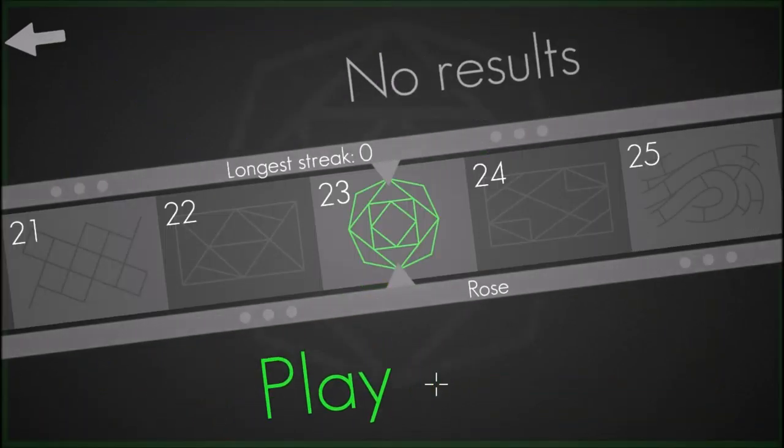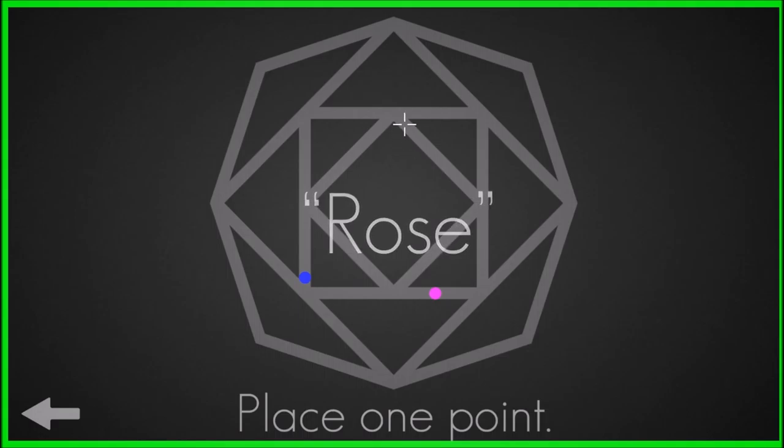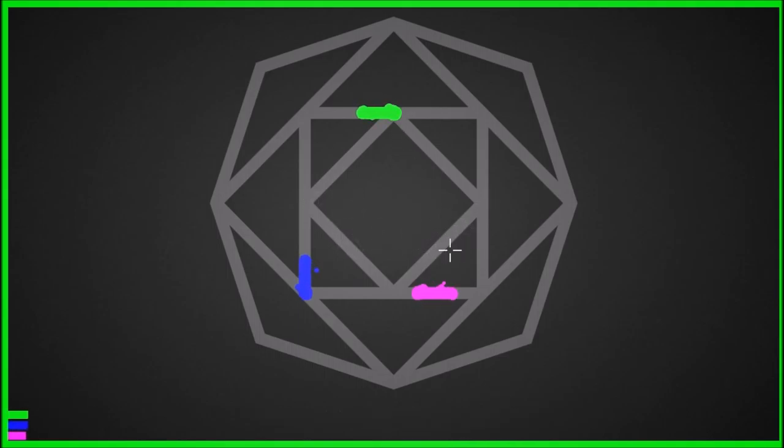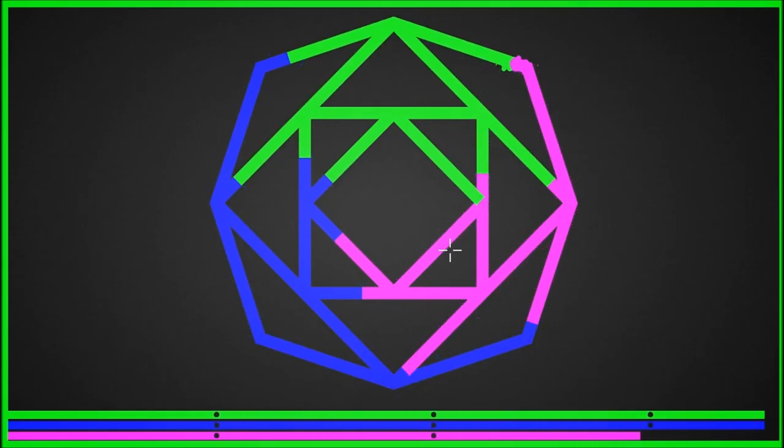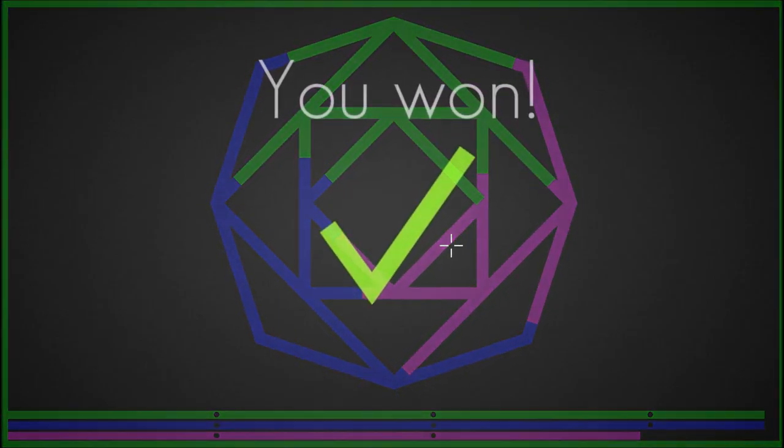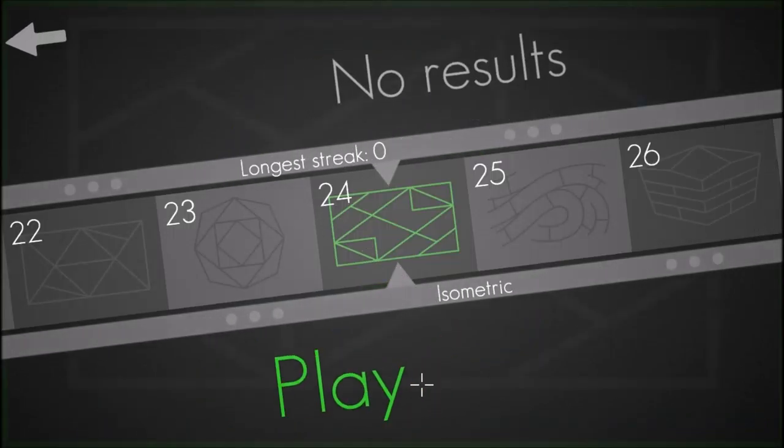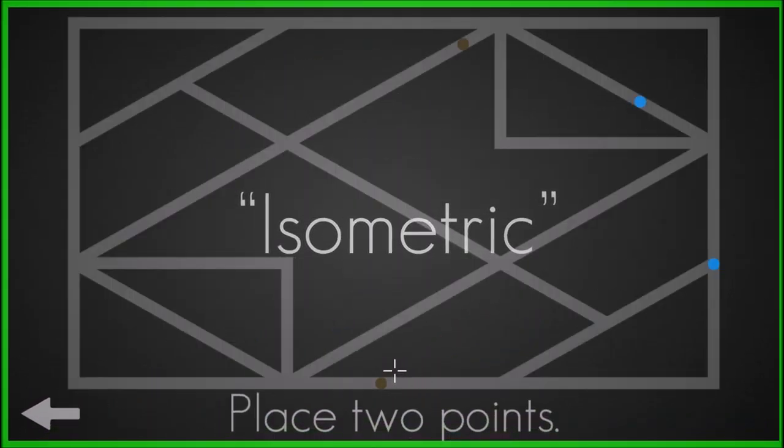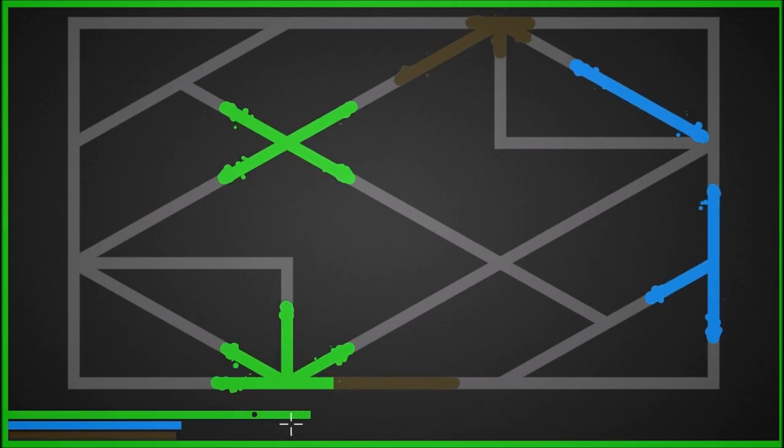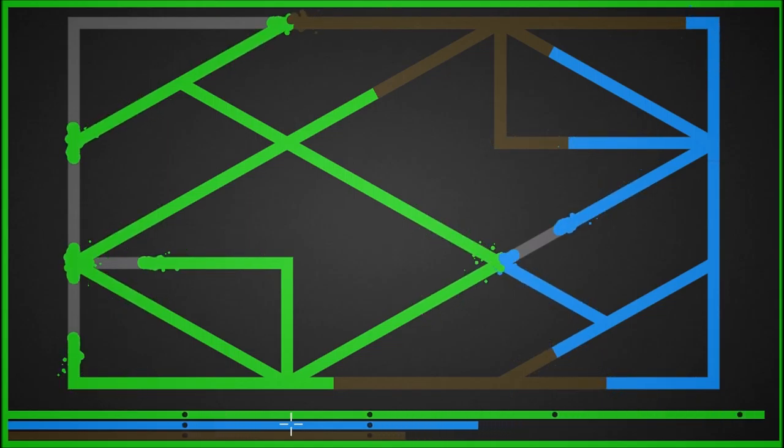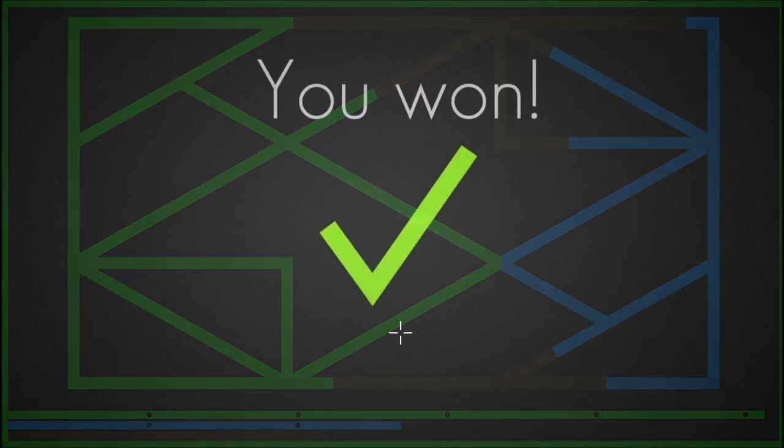A rose. Oh, that was so close. I had blue by just a small sliver. Isometric. Yeah, we got that one too. Alright, number 25, coming up, the last level of the day.